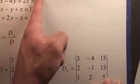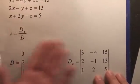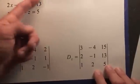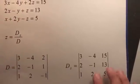You could find out what y is by doing d sub y over d. And you would just replace the y variables with 15, 13, and 5. And you would be able to get the second variable. And then once you get two variables, you could plug in y and z into one of the equations and find out what x is.